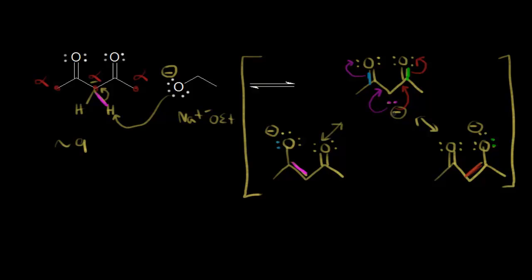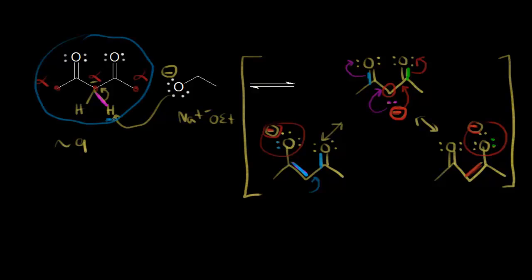The negative one formal charge is delocalized — over this carbon, over this oxygen, and over this oxygen. The more you delocalize or spread out a negative charge, the more you stabilize the anion. This is a very stable anion because of resonance and also because of conjugation: here's a double bond, then a single bond, then a double bond. Since we have a very stable conjugate base, this beta-diketone is likely to donate one of these protons, which is why its pKa value is so low.